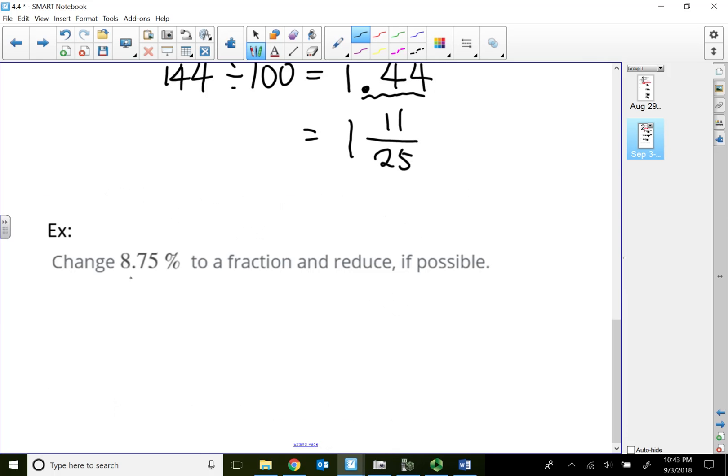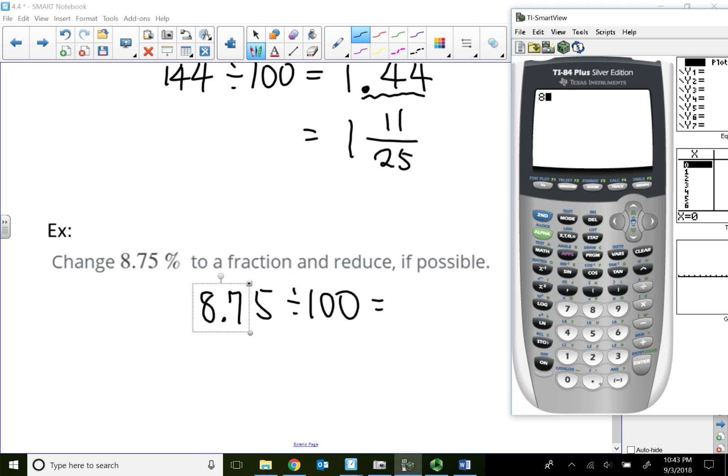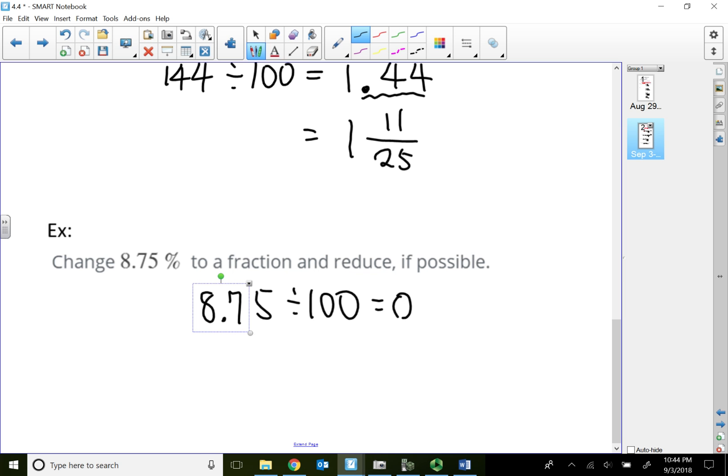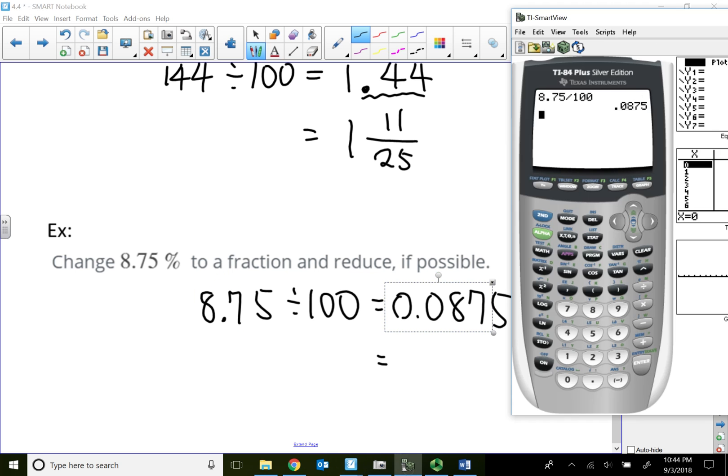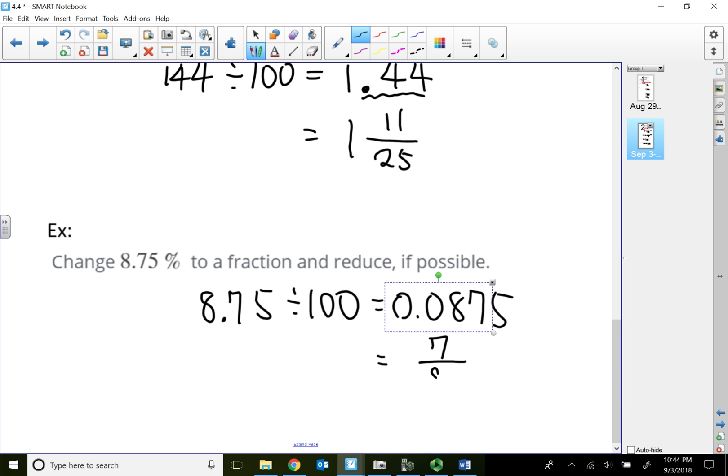Alright, let's take a look at the next example. Same thing. This one is turn 8.75 to a fraction, not a mixed number, just a fraction. So, 8.75 divided by 100 in the calculator to strip away the percent notation. So, that's 0.0875. So, I'm going to turn the 0.0875 into a fraction and that gives me 7 over 80.